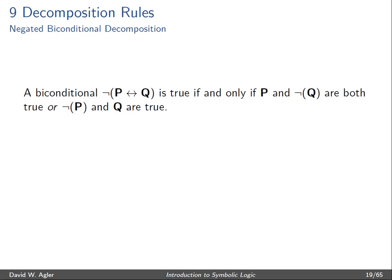A negated biconditional of the form not P double arrow Q is true if and only if P and not Q are both true, or not P and Q are true. So we can express the conditions under which a negated biconditional is true by both branching and stacking — on one side of the branch we write P and not Q, and on the other side we stack not P and Q.